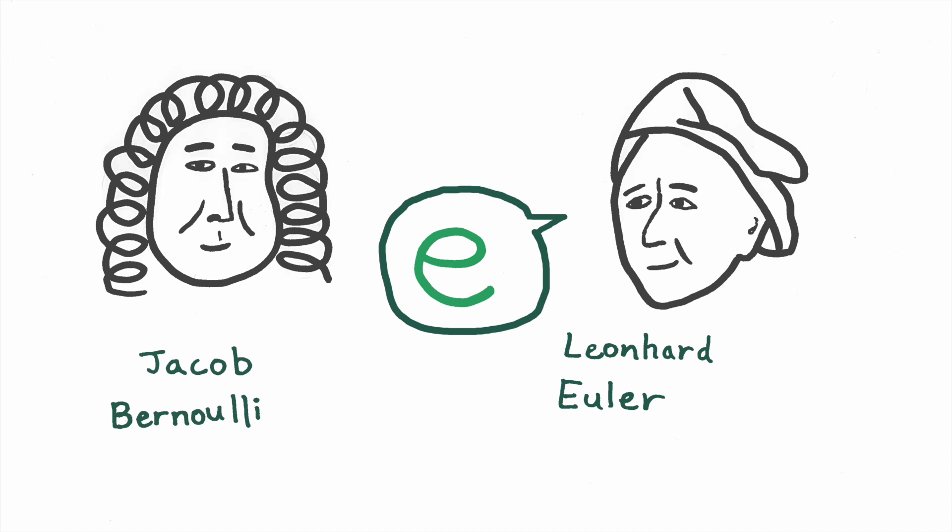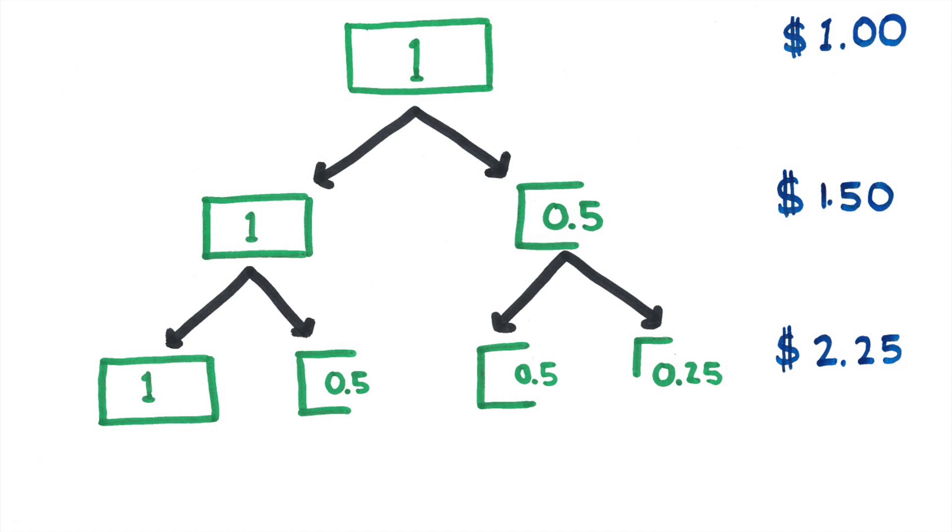Bernoulli first defined E through compound interest. Compound interest says that you get a little bit of money in interest every period, and that money you gained helps you gain even more interest next period. In other words, your interest compounds.